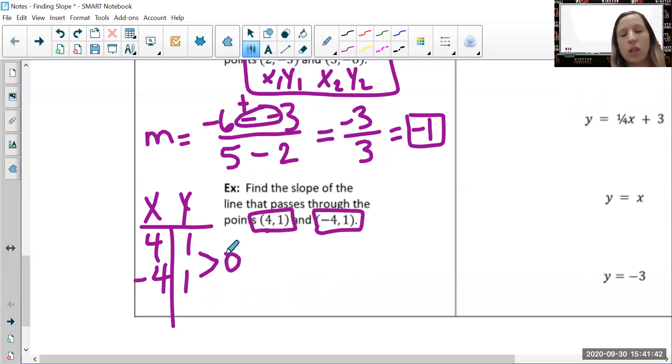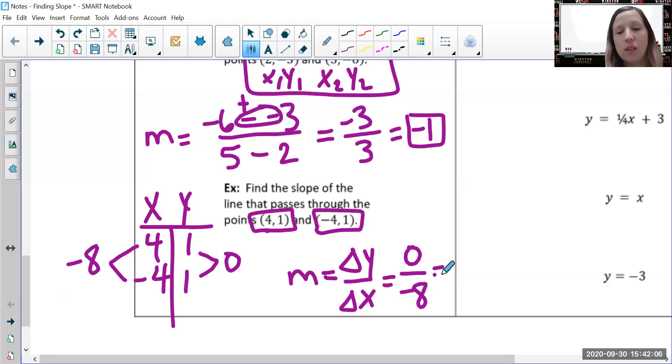Now use the table method. The change in the y's from one to one is zero. From four to negative four is a decrease of eight units. Change in y divided by change in x: zero divided by negative eight is zero, so our slope is zero.